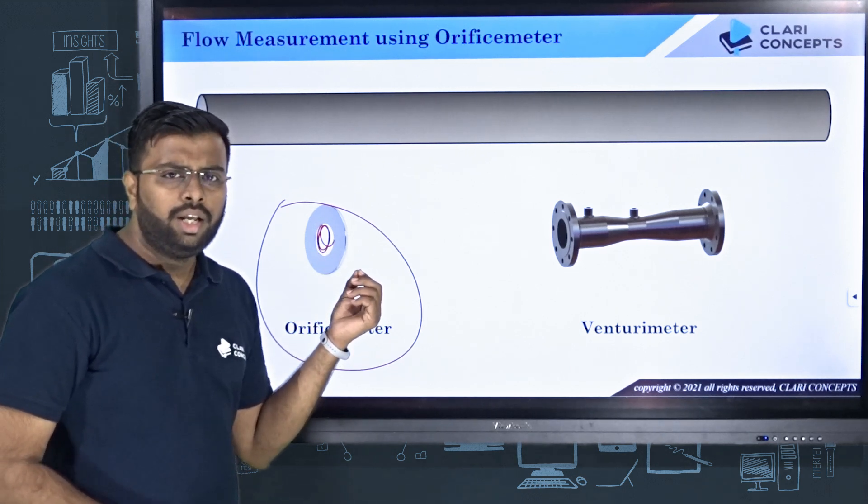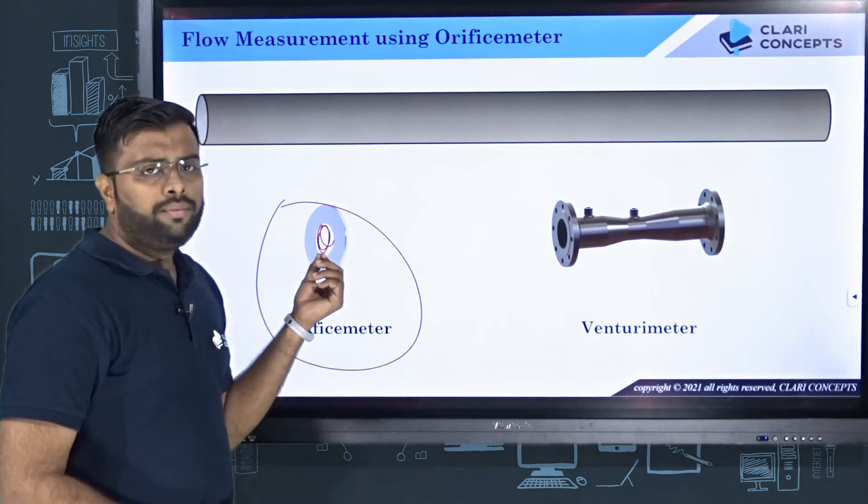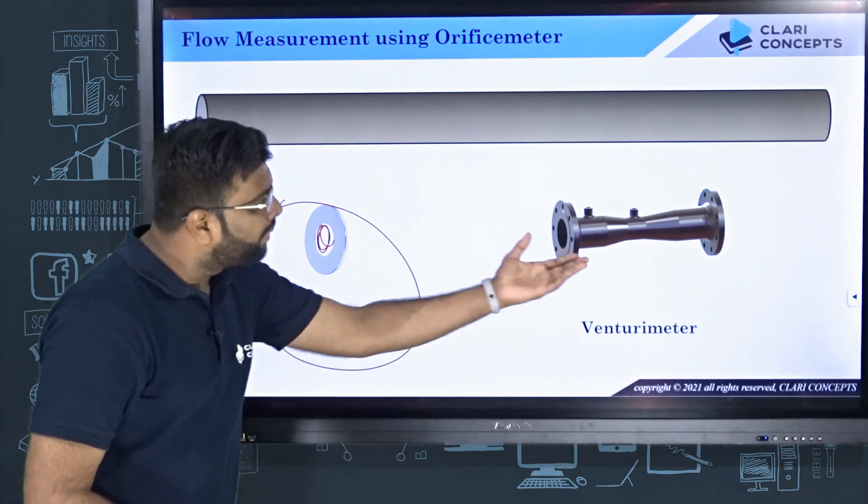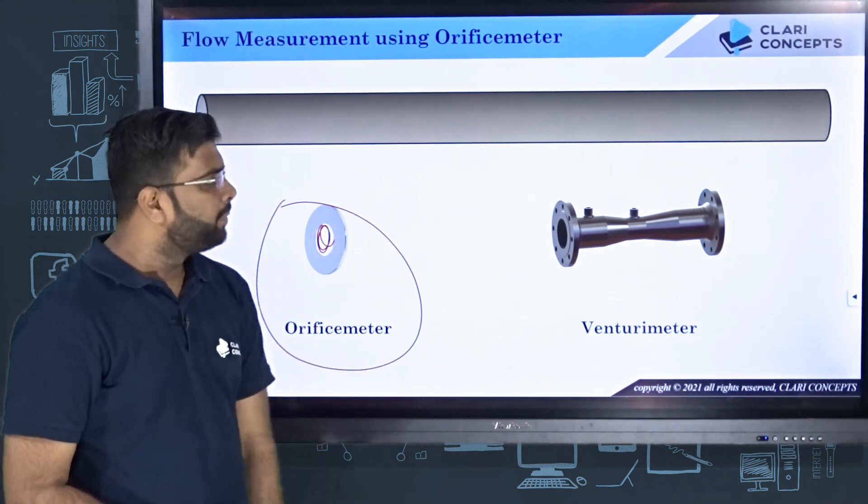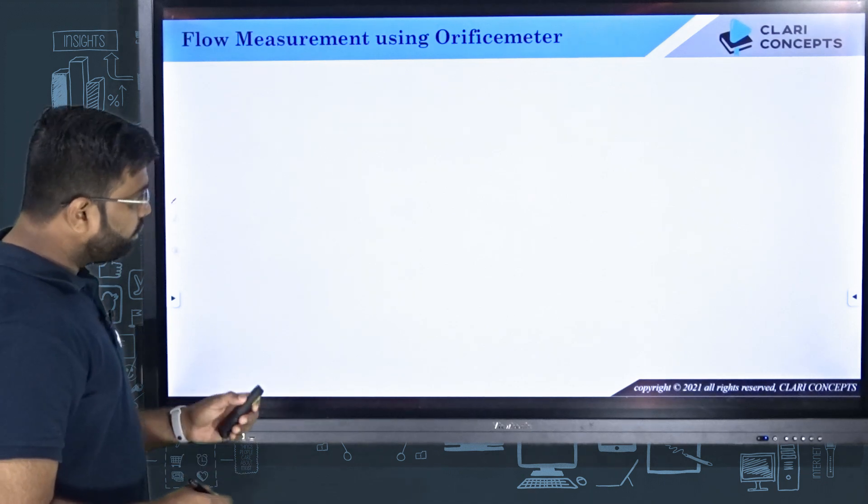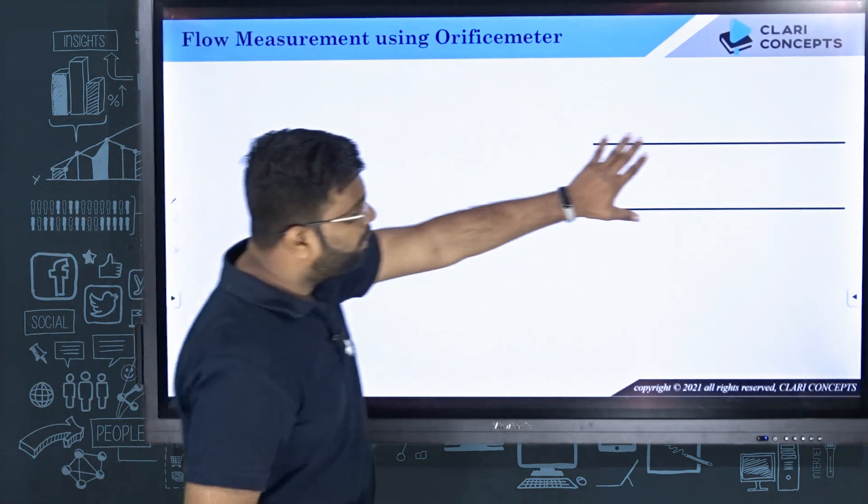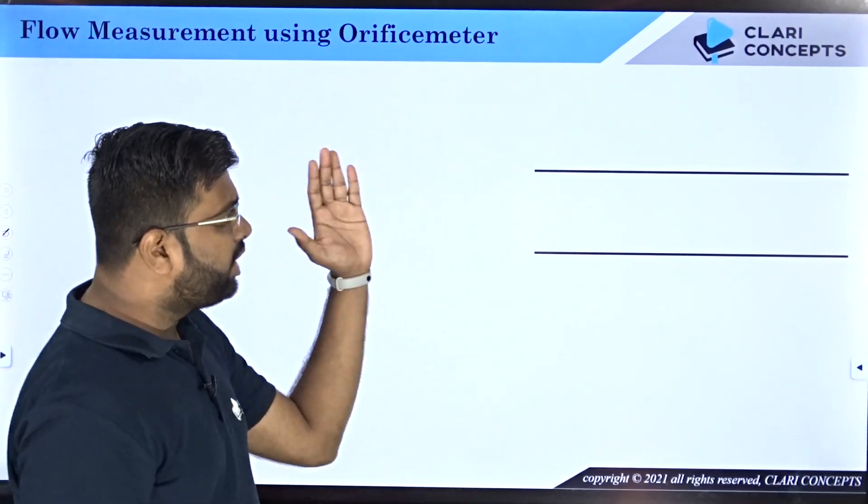The accuracy of this flow measurement is not that good in comparison to venturimeter, but on the other hand the device is very cheap. So let us see how this is used. I have the pipe through which the fluid is flowing - this is a sectional view of the pipe.